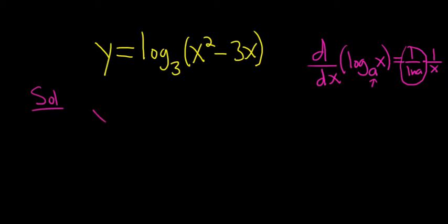Okay, so let's take this derivative. Y prime, it's 1 over ln 3 times, and then we have all of this stuff here. So it's 1 over all of this stuff,